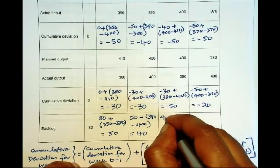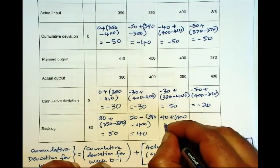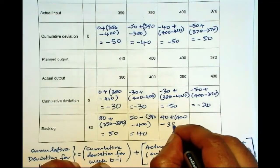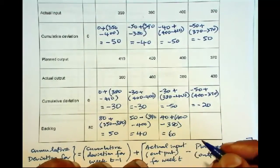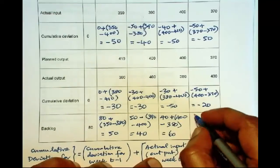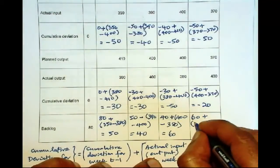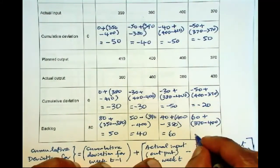Then 40 plus 400 minus 380. So there is now more input than output, so backlog goes up. And 60 plus 370 minus 400 gives us 30.